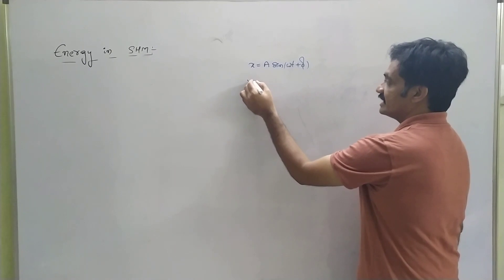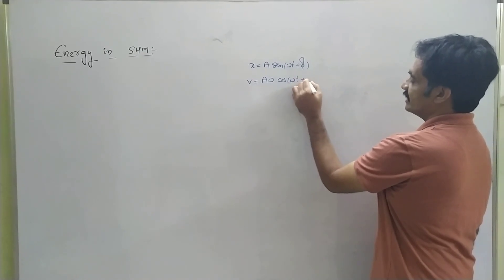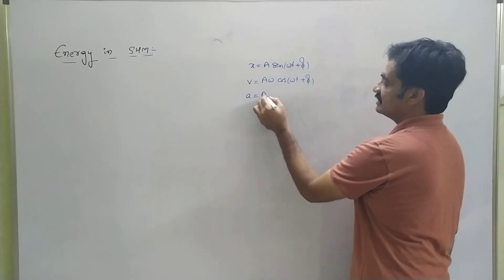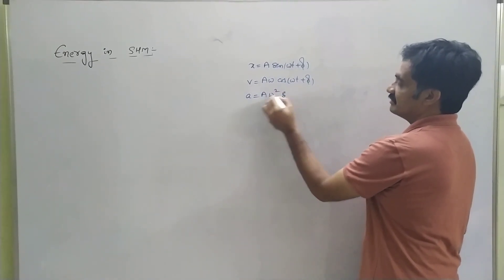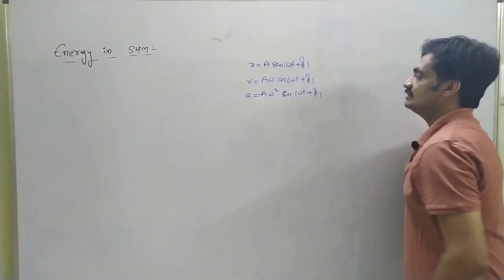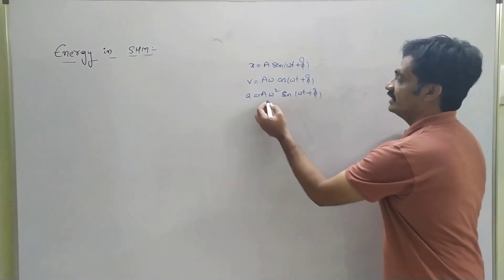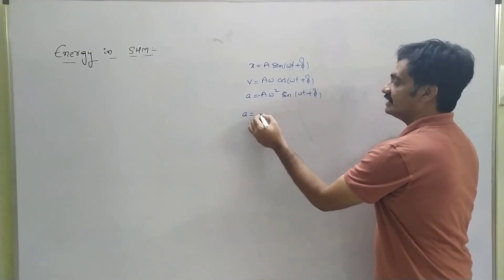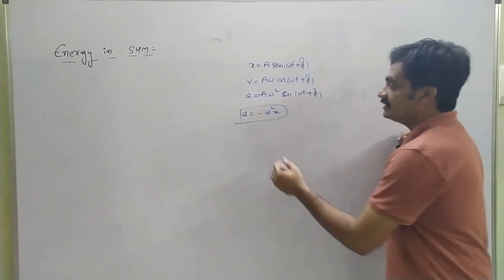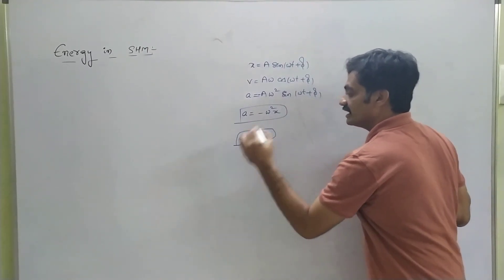Velocity has been represented as v equals to Aω cos(ωt + φ). The acceleration is given as a equals to -Aω² sin(ωt + φ). As we observe, the displacement is x equals to A sin(ωt + φ). If we substitute this value, we have acceleration a equals to -ω² times x.